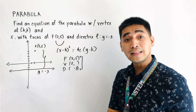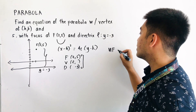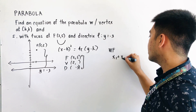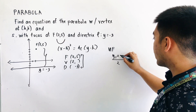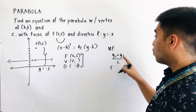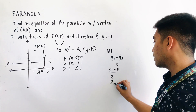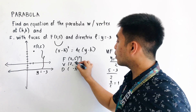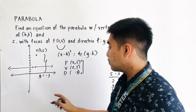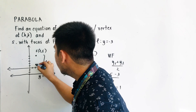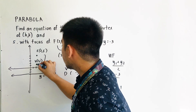When getting the middle value, we use the midpoint formula: (y1 plus y2) over 2. Here, y1 is 5 and y2 is negative 3. So that becomes (5 plus negative 3) over 2, which equals 2 over 2, which equals 1. Therefore, the vertex is now located at (2, 1). Our parabola is opening upward.